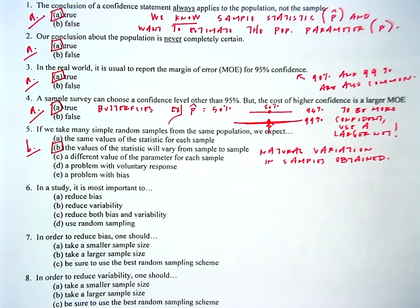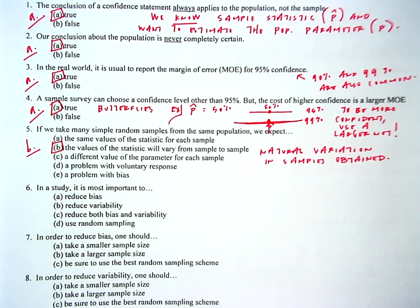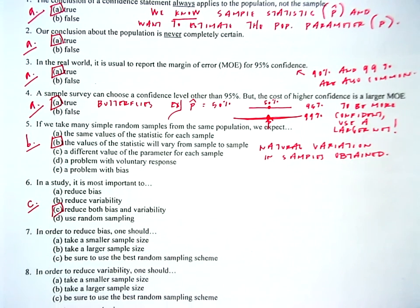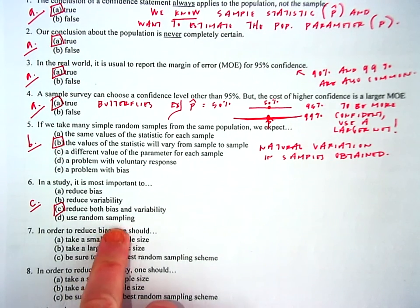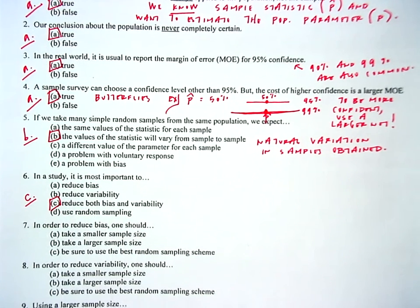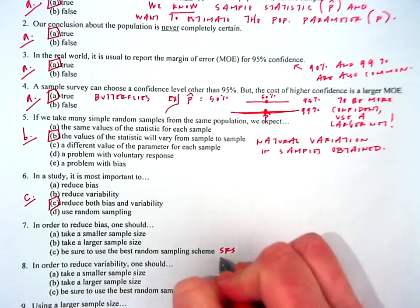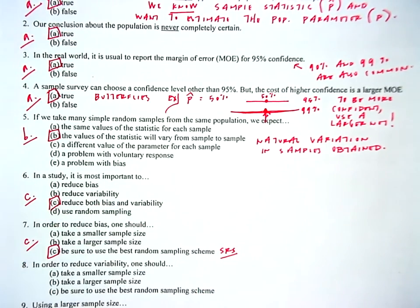We don't want any bias — results consistently off in the same direction — and we don't want excessive variation. We want statistics to be tightly packed around where the truth actually is. So for question 7: to reduce bias, we want to make sure we use randomization — use the best random sampling scheme, which we usually call an SRS. Choice C looks great for that as well.